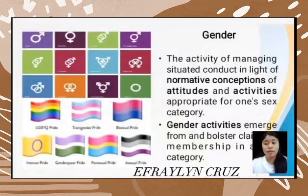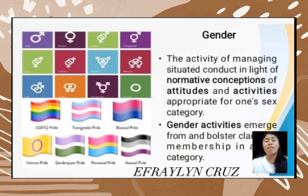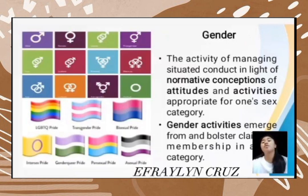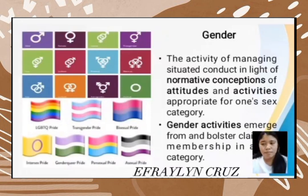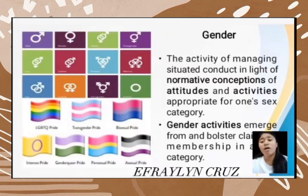Next is the transgender symbols in lavender. The bisexual pride flag represents bisexuality and bisexual individuals. The magenta stripe represents attraction to the same sex, while the blue stripe represents attraction to the opposite sex. The purple stripe, the overlap of blue and magenta, represents attraction regardless of sex or gender.